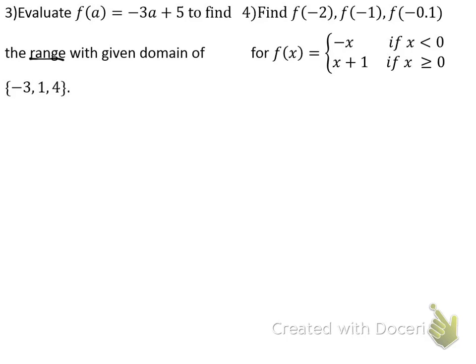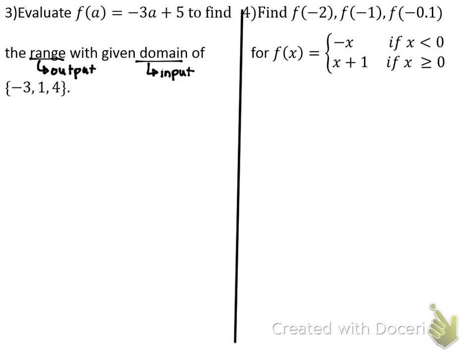Okay, number three. We got some words here. This problem says evaluate f of a. Our function uses A instead of X — it's the same thing. It says whenever we put a number or ingredient in, we're going to take negative three times the ingredient plus five. There are some new math words: range is the output, and domain is the input — these are the ingredients. It's asking what happens if we put three different ingredients in. We're going to run this math machine three times.